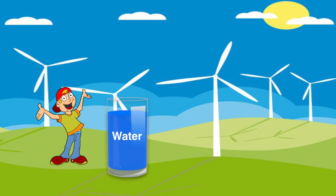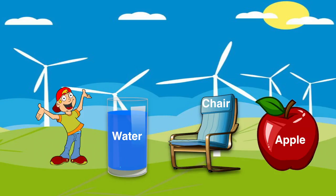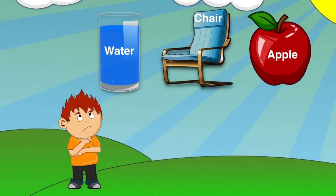Everything around you - water, chair, apple - has a weight. But they are so different from each other. How do you categorize these things?